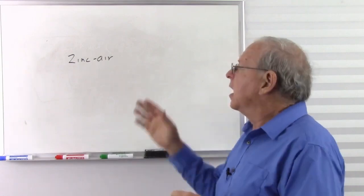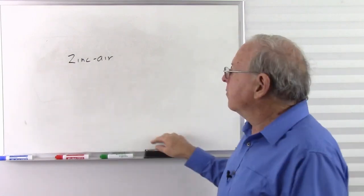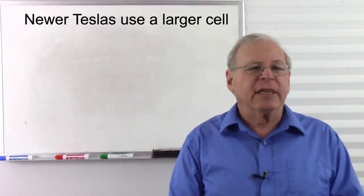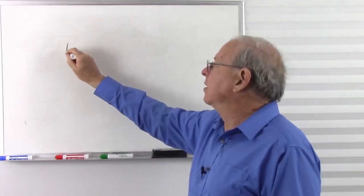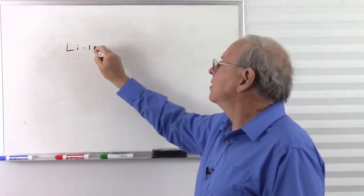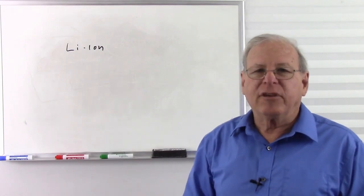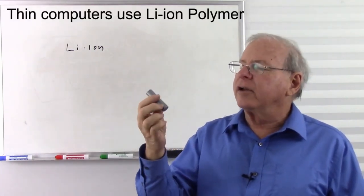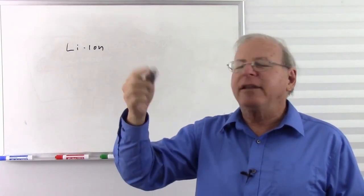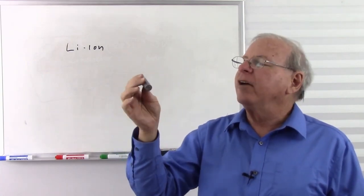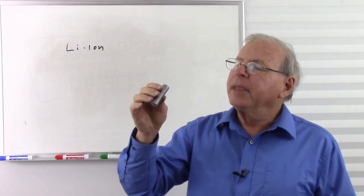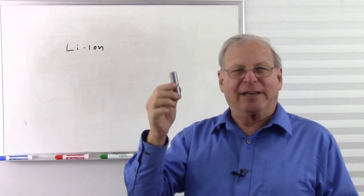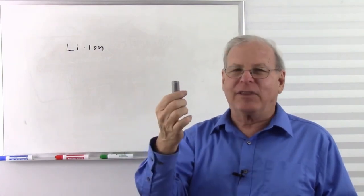Those are some common primary batteries that are not rechargeable. Now for secondary batteries that are rechargeable — perhaps the most common these days is your lithium ion battery. Most commonly you see these in computers. I held up a lithium ion cell earlier — this is an 18650, the most common size. You tear apart your computer battery and you're likely to find these in there, and if you tear apart your Tesla battery you're going to find thousands of these.